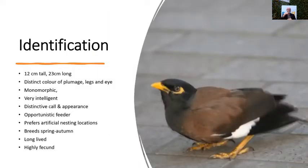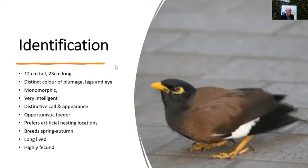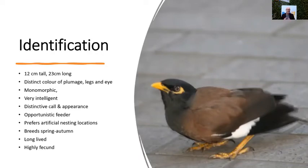Looking at identification: we're looking at a bird that sits 12 centimetres tall, 23 centimetres long. It's a very distinctive looking bird - white primary feathers in flight, showing brown, black and white underneath. The colouration of the plumage, beak, eye patch and legs tend to be very specific to that bird. This bird is also monomorphic, meaning the male and the female essentially look the same - unlike polymorphic species where male and female look different in size or colour plumage. Indian mynas are very intelligent with a distinctive call, which also lends to its inclusion in the passerine group.